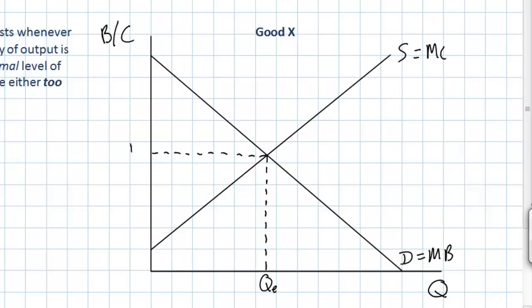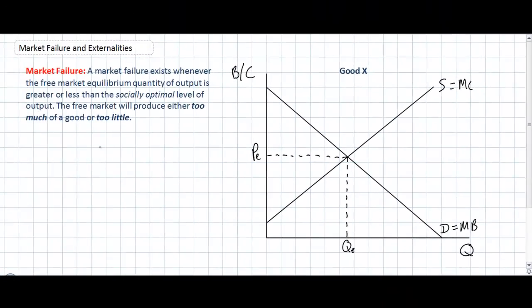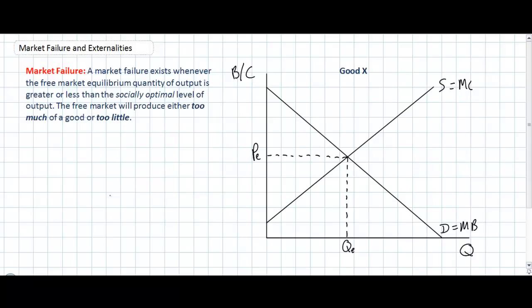So far there's nothing all that different about our graph. We see the upward sloping supply curve and the downward sloping demand curve. The only difference is that we're also considering supply as representing the marginal cost of production of the particular good, and demand representing the marginal benefits to the consumers of that good. So when does a market failure exist? Let's begin with a particular type of market failure known as negative externalities of production.